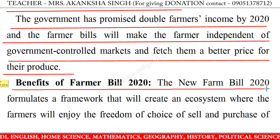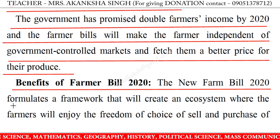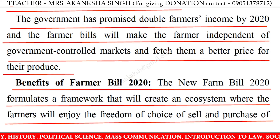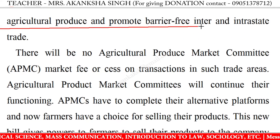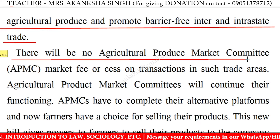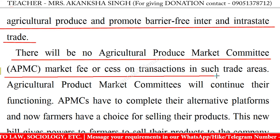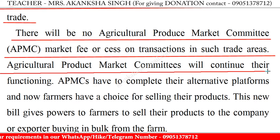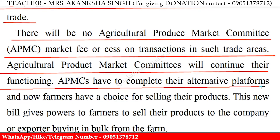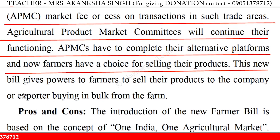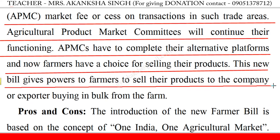The new Farm Bill 2020 formulates a framework that will create an ecosystem where farmers will enjoy the freedom of choice in the sale and purchase of agricultural produce, and promote barrier-free inter- and intrastate trade. There will be no APMC market fee or cess on transactions in such trade areas. Agricultural Product Market Committees will continue their functioning, but farmers now have a choice for selling their products. This new bill also gives farmers the power to sell their products to companies or exporters buying in bulk directly from the farm.